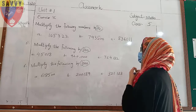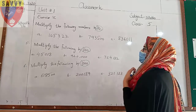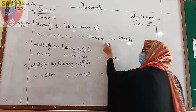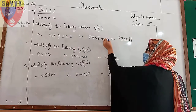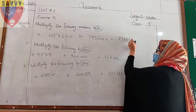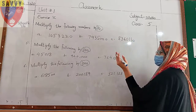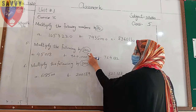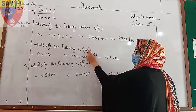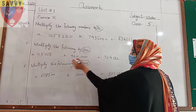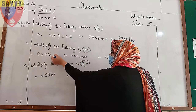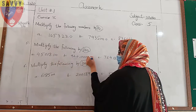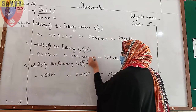When multiplying by 10, there is only 1 zero, so you add 1 zero. When multiplying by 100, there are 2 zeros, so you have to add 2 zeros in each question.